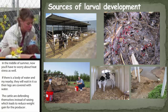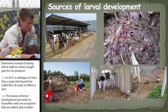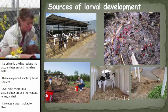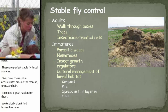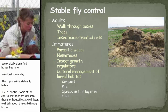The sources of larval development for stable flies are very similar to house flies, with one key exception: primarily the hay residue that accumulates around hay bales. Over time, as cattle pull hay out to eat, the residue accumulates along with manure, urine, and rain, creating a great habitat for larval development. We typically don't find house flies here — this is primarily a stable fly habitat. For control, some methods are similar to those for house flies, including traps and insecticide-treated nets for adult control. Like house flies, find the sources of larval development, then either treat it with a biological or chemical form of control or clean it up.